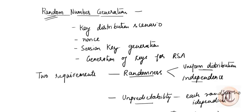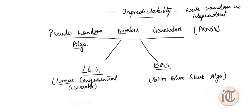For a number to be called a random number, there are two requirements: randomness and unpredictability. We have already discussed all these topics. Next, there are two algorithms used to generate pseudo random numbers. A pseudo random number is one that is calculated by an algorithm, meaning we can predict the next value — those are called pseudo random numbers. One algorithm is LCG, which we already discussed.